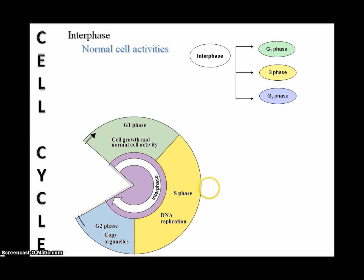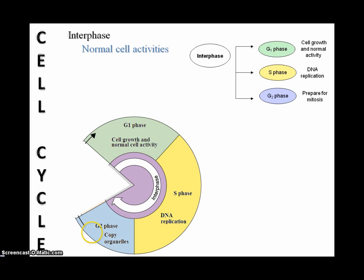The second phase is the S phase — S standing for synthesis — which we recognize as the time where DNA replication is taking place. The third phase is the G2 phase, G referring to gap. This is the second gap phase where very little seems to be happening visibly inside the cell, but in G2 the cell is preparing for mitosis by copying all organelles. Be sure you have this diagram drawn out in your notes.